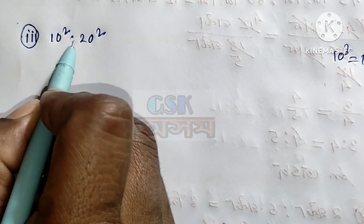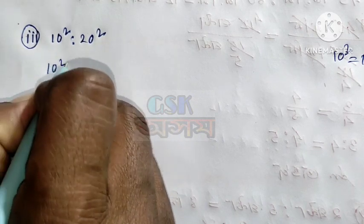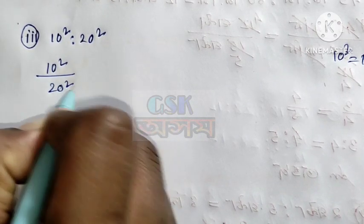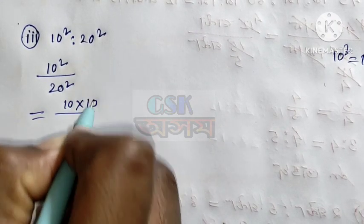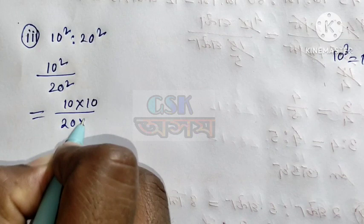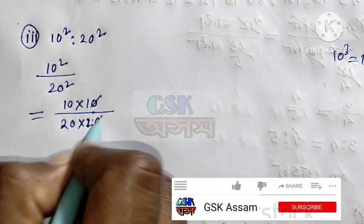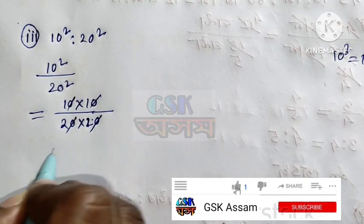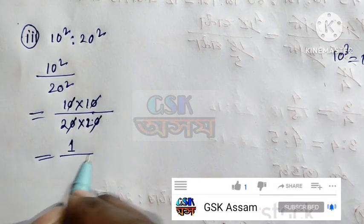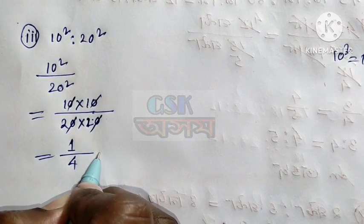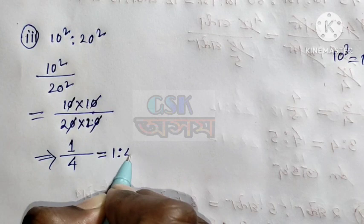10 square is to 20 square. 10 square means 10 into 10. 20 square means 20 into 20. This is equal to 1. This is equal to 2. This is equal to 1.